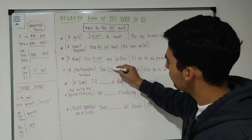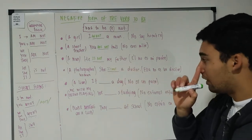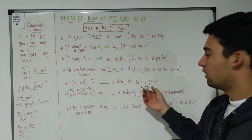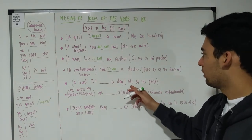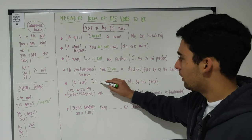A lion is not a dog, so no es un perro. It is not a dog, it is not a dog, it's a lion.